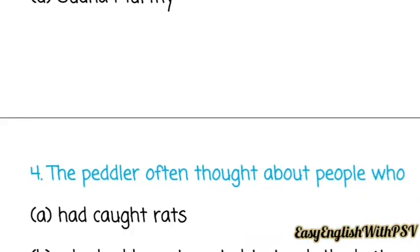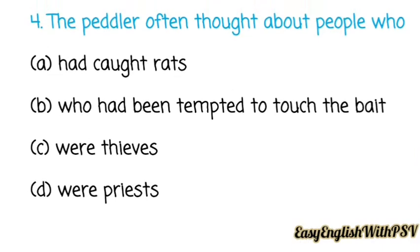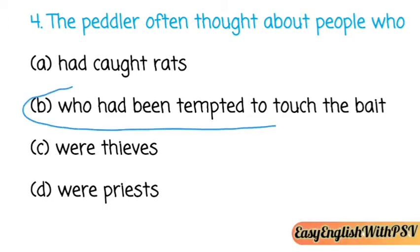Question number four: The peddler often thought about people who — had caught rats, had been tempted to touch the bait, were thieves, or were priests? The correct option is the second one: who had been tempted to touch the bait. And he thought he was very happy about this.